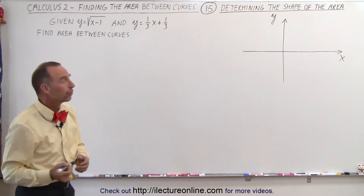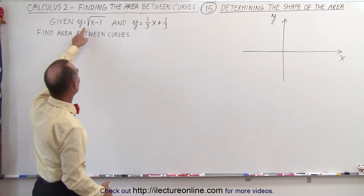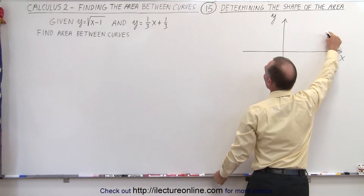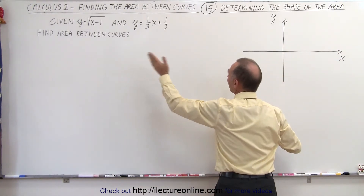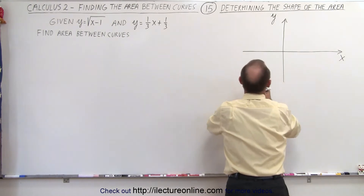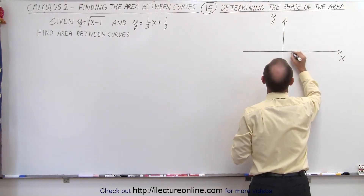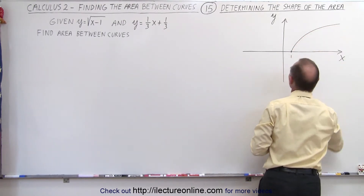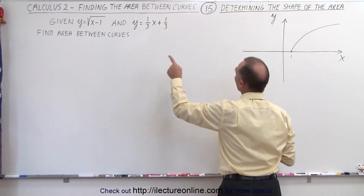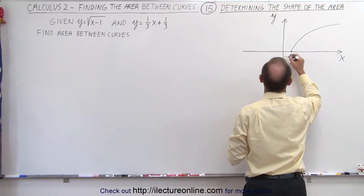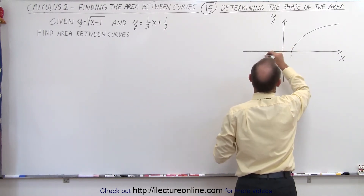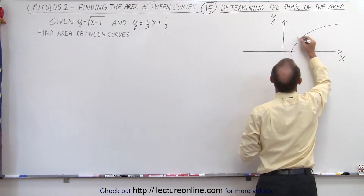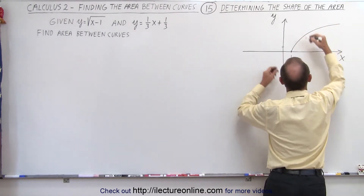Let's go ahead and graph these. The function y equals the square root of x starts at the origin, but since it's the square root of x minus 1, it's shifted right by 1 and starts at x equals 1. For y equals one-third x plus one-third, the question is: does it cross the first function, or does it go over it? It's not always clear which way it goes.